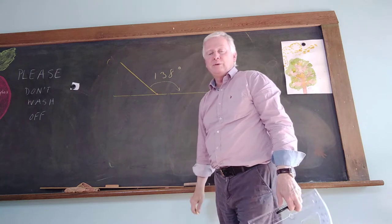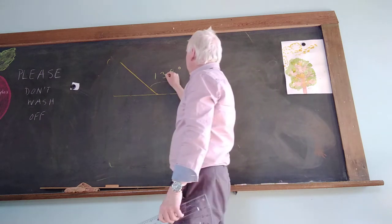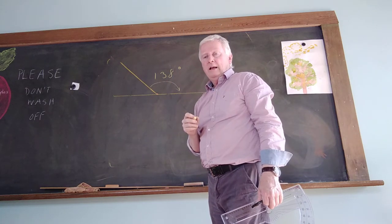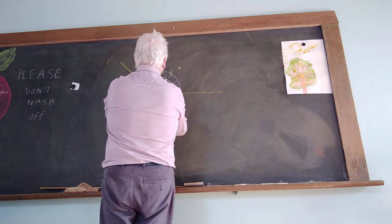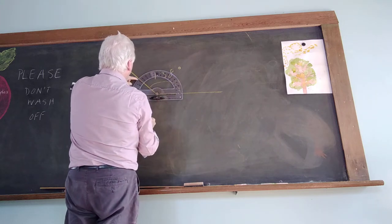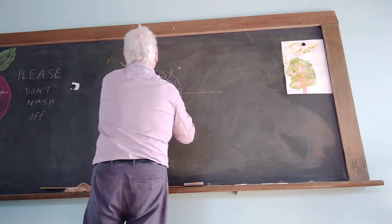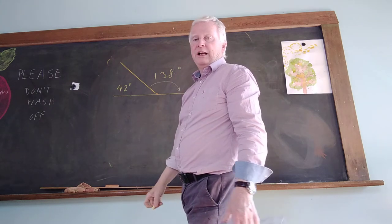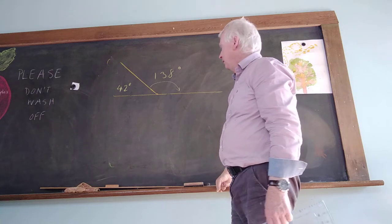So 138 degrees. You could approximate it to 140. There is a degree of error allowed in school. So this is bigger than 90 degrees. But it's not greater than 180 degrees. And this angle here should give me the other number that adds up to 180 degrees. So that's 42. 42 degrees. And there you have it.